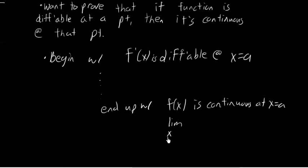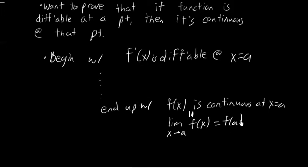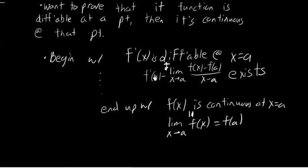f(x) is continuous at x = a is identical to saying the limit as x approaches a of f(x) equals f(a). These two statements are equivalent. And how can we quantify the differentiability statement? We can say that f'(a), defined as the limit as x approaches a of [f(x) − f(a)] / (x − a), exists.